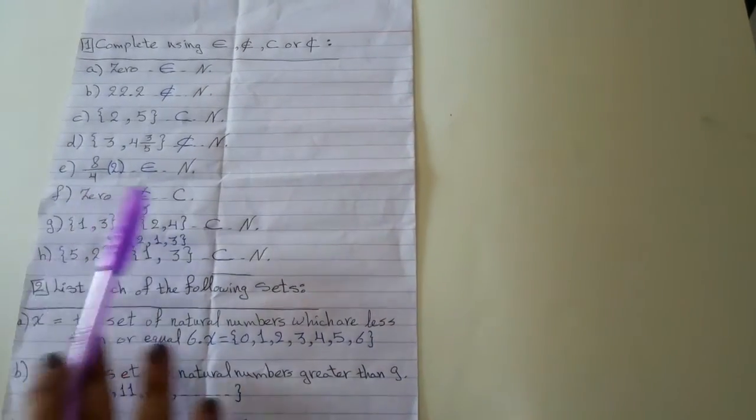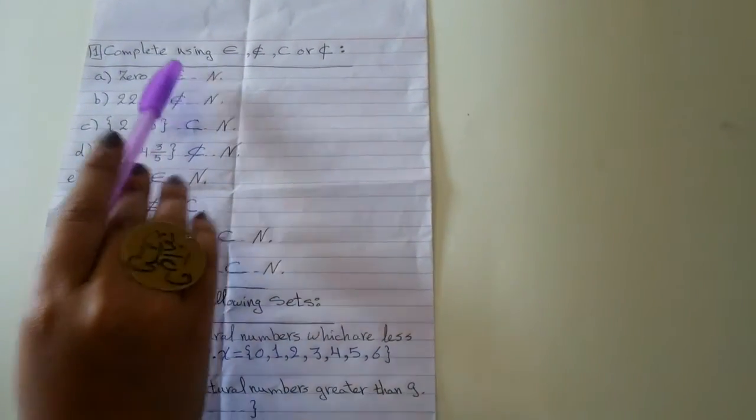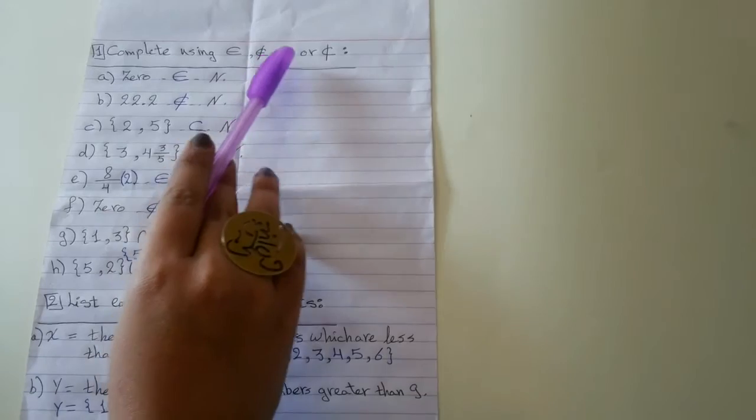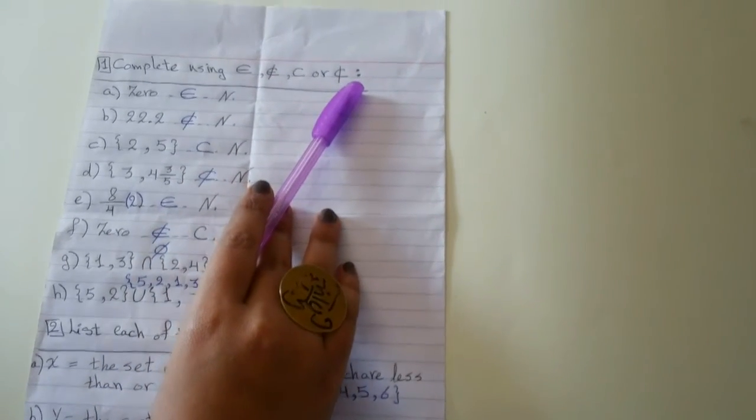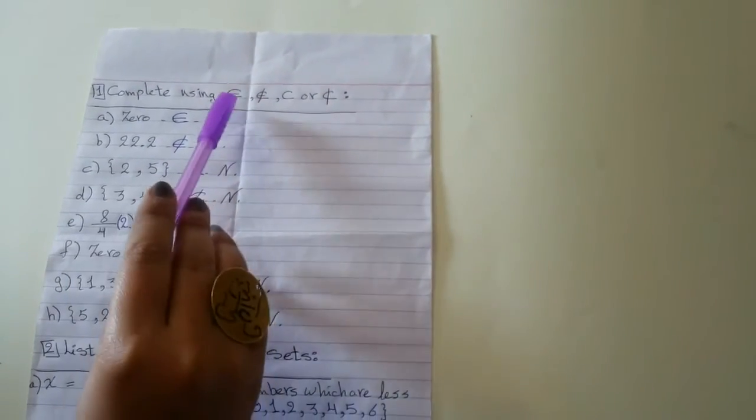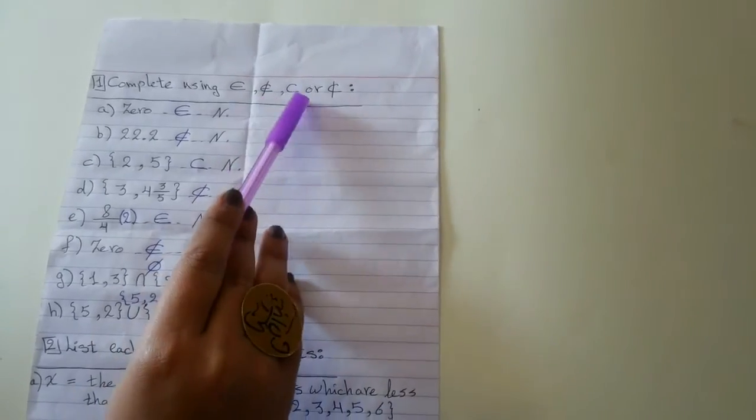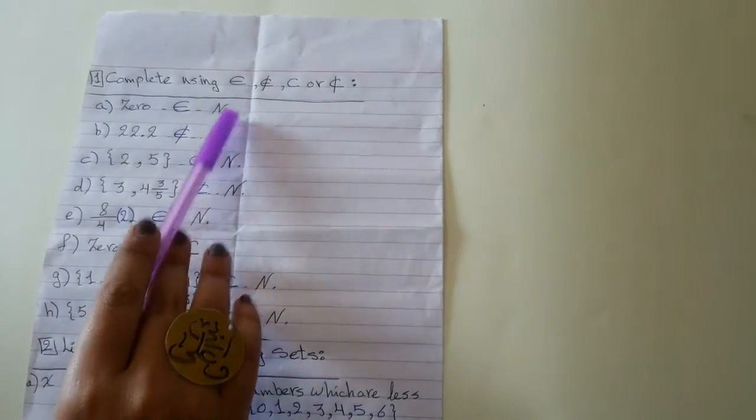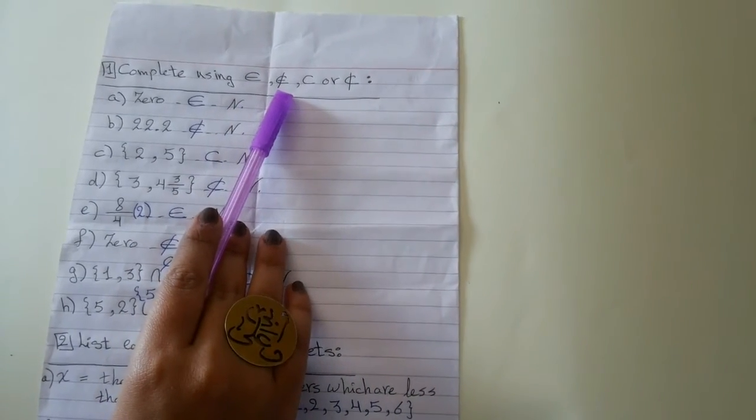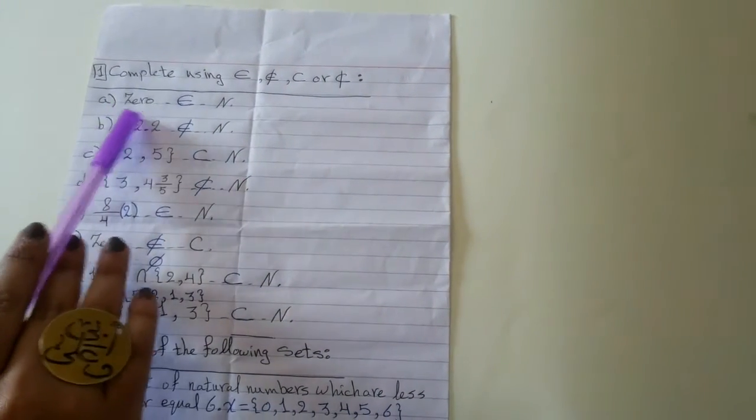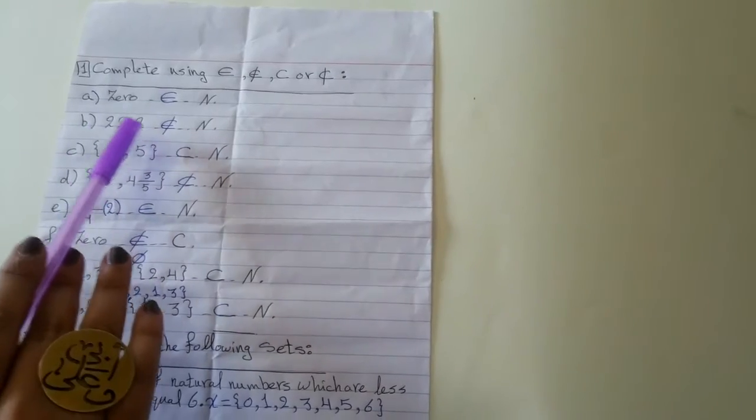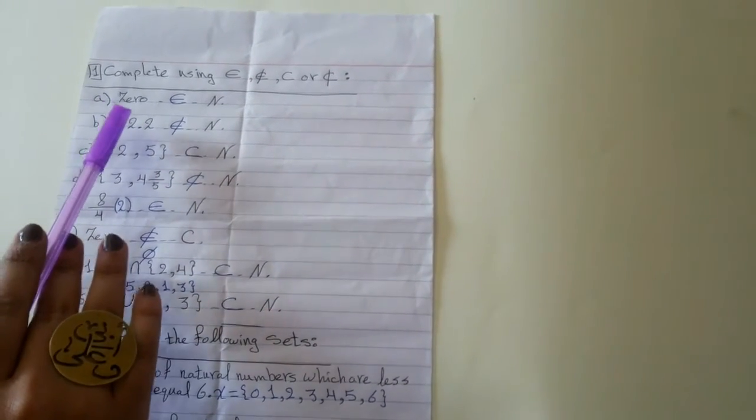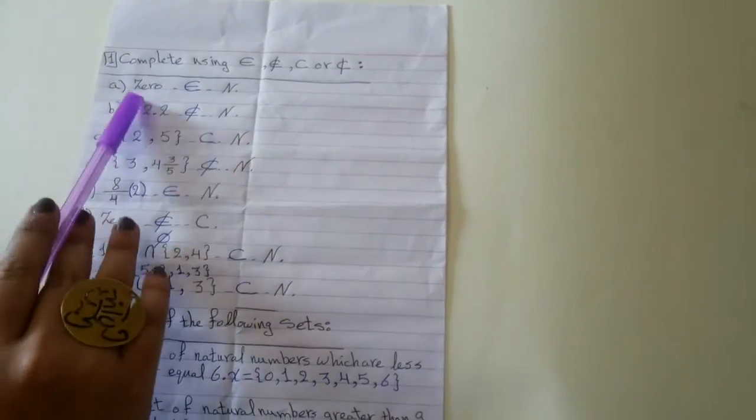Number one, complete using element or not element, subset or not subset. Let's remember together what's the element and what's the subset. If we see element and set, put element or not element. Element means number without braces or without the name of the set.